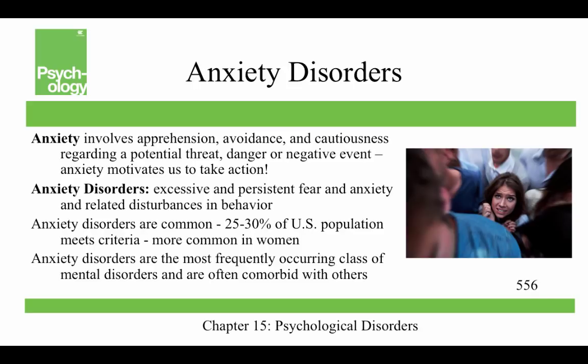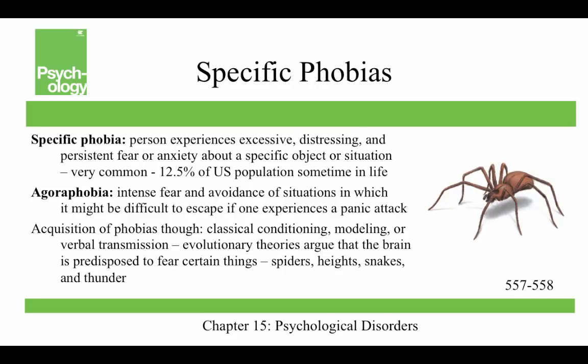Let's now start talking about specific disorders, beginning with anxiety disorders. Anxiety involves apprehension, avoidance, and cautiousness regarding a potential threat, danger, or negative event, and it motivates us to take action. Anxiety disorders occur when anxiety is excessive and persistent, with related disturbances in behavior. They are very common — 25 to 30 percent of the U.S. population meets the criteria — and they're more common in women than men. Anxiety disorders are the most frequently occurring class of mental disorders and have high comorbidity with other conditions.